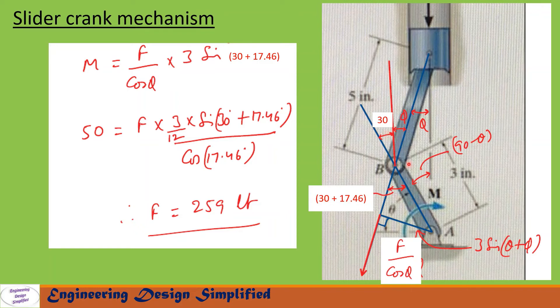Since this one is 90 minus theta and this angle here is 60, this is 30 degrees. So this angle will also be 90 minus 60, that is 30 degrees. The total angle from here to here will become 30 plus phi. Since this angle is 30 plus phi, then this angle between this force line and this crank will also be 30 plus phi, that is 30 plus 17.46 degrees.